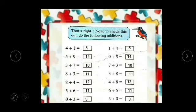So, isn't it easier to carry out addition? So children, whichever method you find easy, you can carry out addition with a method which you like the most. So: 4 plus 1 is 5, 1 plus 4 is also 5. 5 plus 9 is 14, 9 plus 5 is also 14. 3 plus 7 is 10, 7 plus 3 is also 10. 8 plus 3 is 11, 3 plus 8 is also 11. 8 plus 4 is 12, 4 plus 8 is also 12. 5 plus 6 is 11, 6 plus 5 is also 11. 0 plus 3 is 3, 3 plus 0 is also 3.